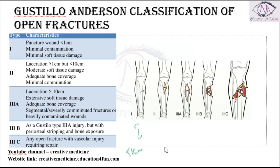Whereas in grade 2, the wound is more than 1 cm in size. It is present 1 to 10 cm in size with moderate soft tissue damage and bone is well covered with no or minimal contamination.